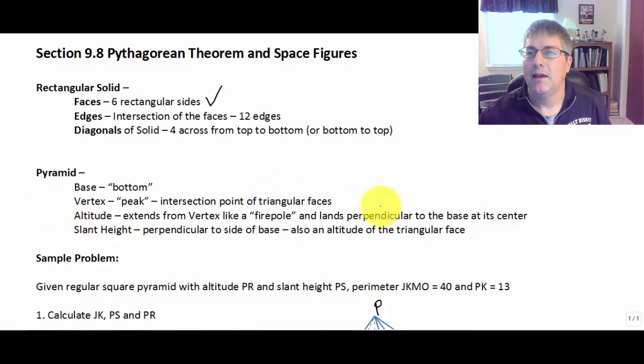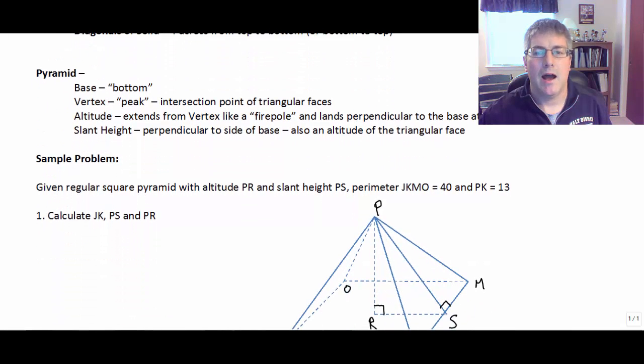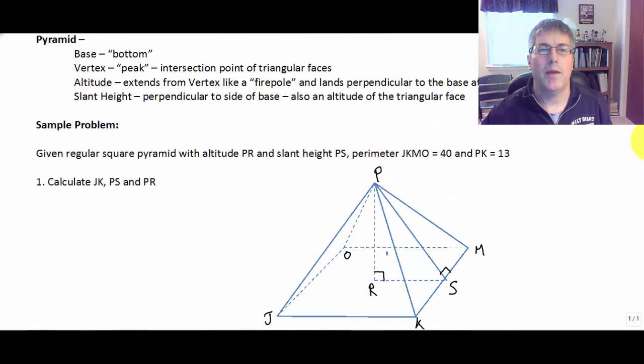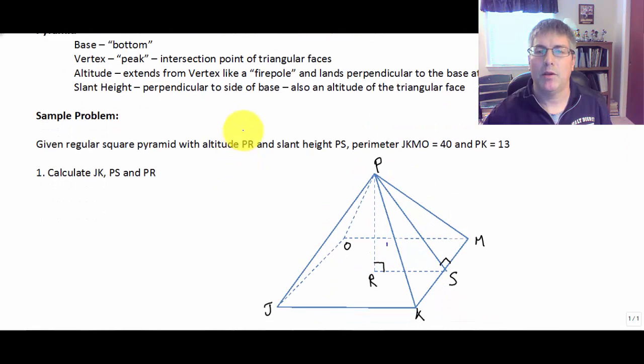And then the pyramid in our diagram below, a little bit different. Our pyramid has a base, a bottom. So our base would be JKOM here. JKMO is our base or our bottom. We're going to refer to it as the base. One base. And the vertex is going to be up here at point P. Our vertex is at point P. Here we go, point P. And it's the intersection of all of our triangular faces. All the faces here, what we normally see on a pyramid. Those triangles are going to be our faces.